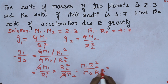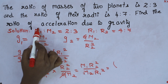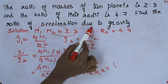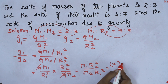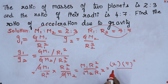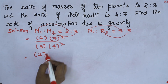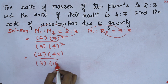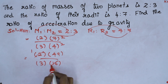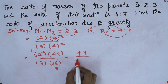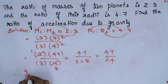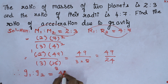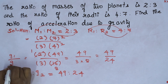Substituting: M1 is 2, M2 is 3, R1 is 4, R2 is 7. So: 2 times 7 squared divided by 3 times 4 squared. That gives 2 times 49 divided by 3 times 16 — equals 98 divided by 48. Cancel: 2 eights are 16, so 49 divided by 24. Therefore the ratio of acceleration due to gravity g1 to g2 is 49 to 24.